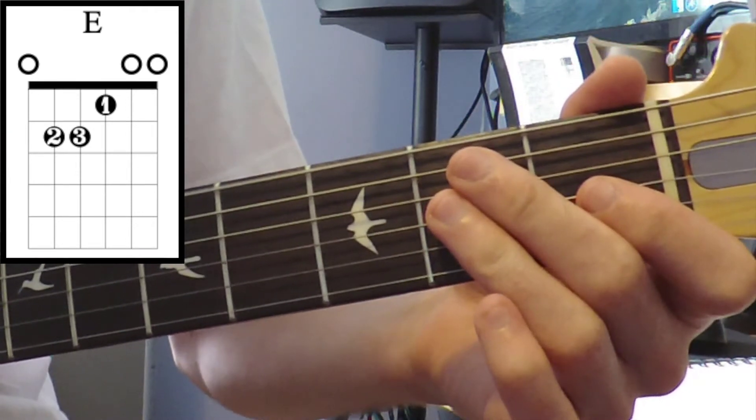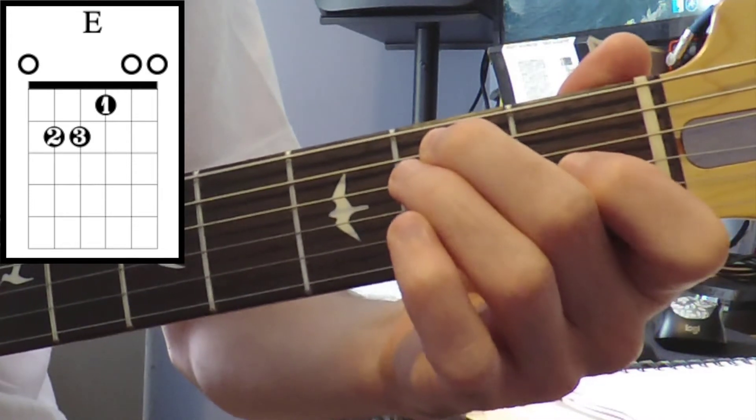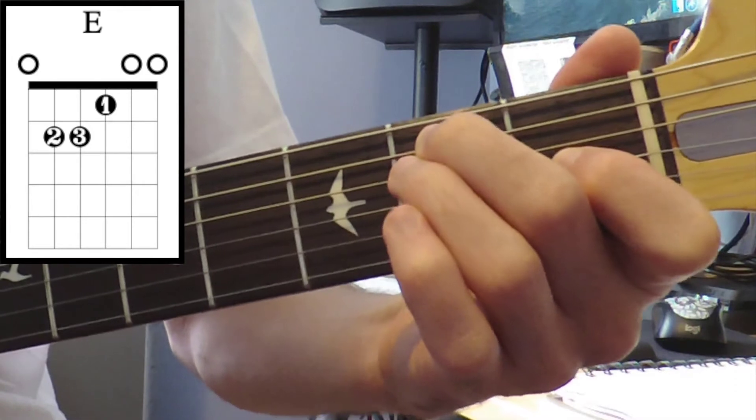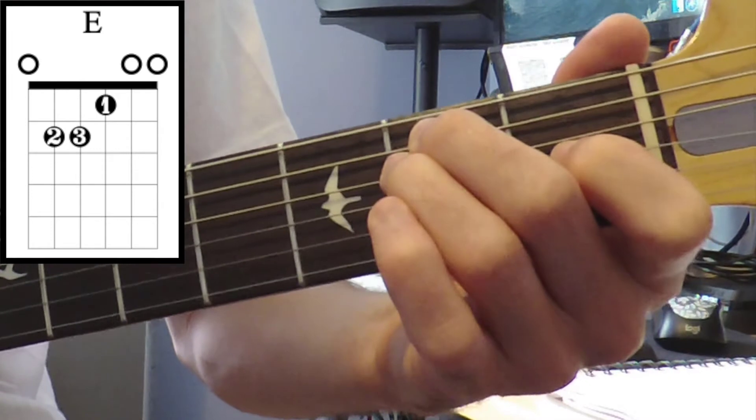go open E, open low E, second fret on the A, second fret on the D string, first fret on the G,